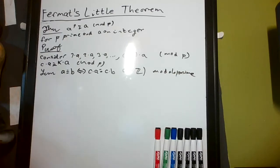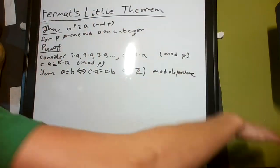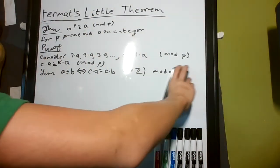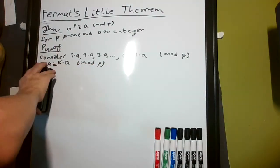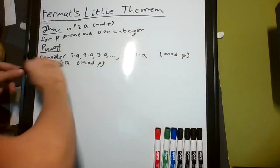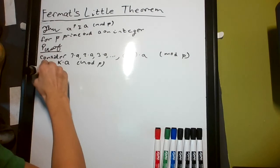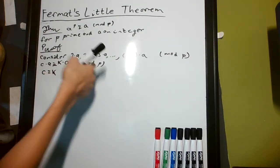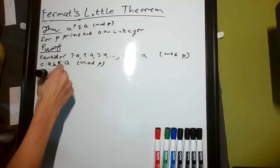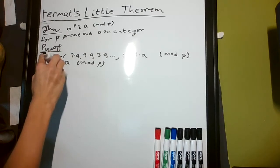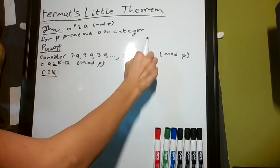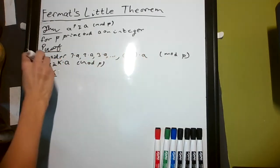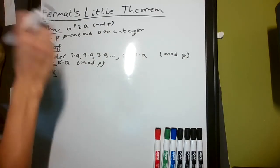It's a less strict requirement theorem. Basically, if c times a is congruent to k times a, then c is congruent to k, as you're just dividing both sides by a. Since a is not a multiple or factor of p, and c and k are both between 1 and p minus 1, this congruence is really just an equality.